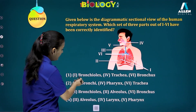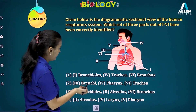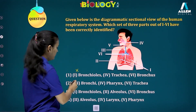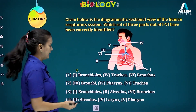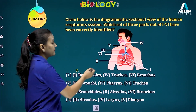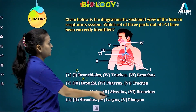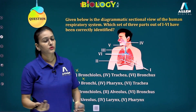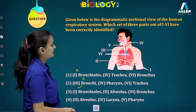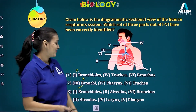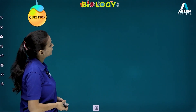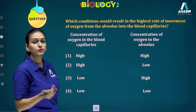Analyzing each option: Option one says label one is bronchioles (correct) but label four is trachea — incorrect, so option one is wrong. Option two says label three is bronchi — wrong, it's the trachea — so option two is incorrect. Option three says label one is bronchioles (correct), label two is alveolus (correct), and label six is bronchus (correct). Option four says label four is larynx — it is actually pharynx. Therefore, option three is the correct answer.